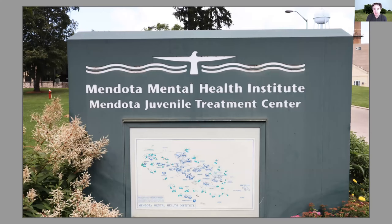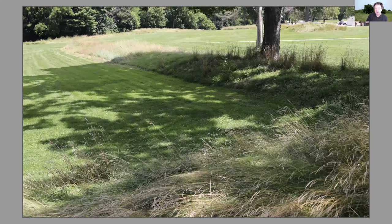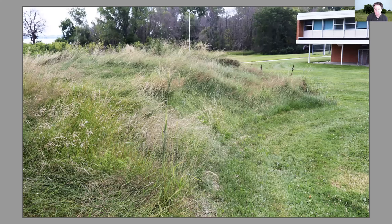Here's another site with some spectacular mounds — this is in the Madison area, the Mendota Mental Health Institute right along the shores of Lake Mendota. You can see in their logo they've got an extended-winged bird. On top of one of those mounds is this eagle effigy — the largest Indian mound of its type in Wisconsin, with a body of 131 feet and a wingspan of 624 feet. Not many of these survive. Here you get a view from the body of the bird looking out toward the wing, and here is the head of that bird, with the wings going out in both directions.